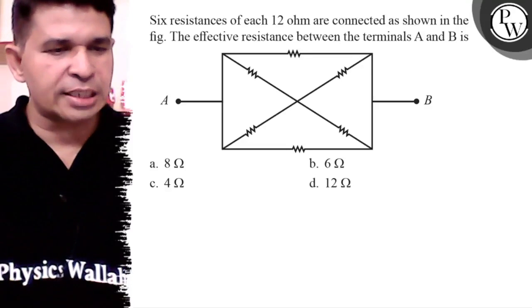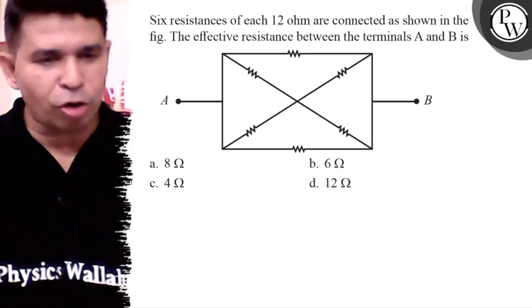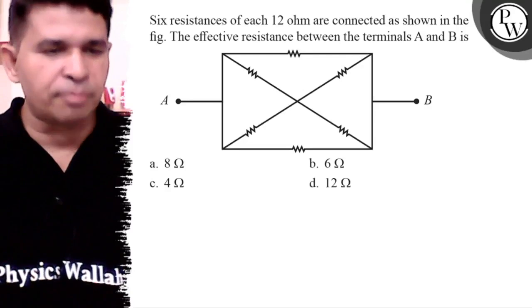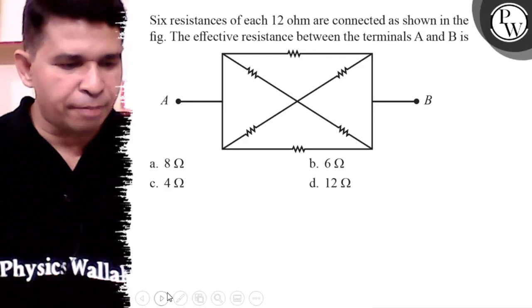Hello Bacho, let us see this question. Six resistances of each 12 ohm are connected as shown in the diagram. The effective resistance between terminals A and B is: